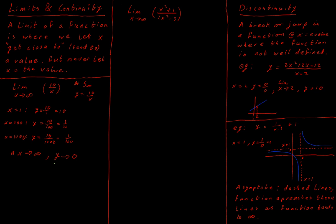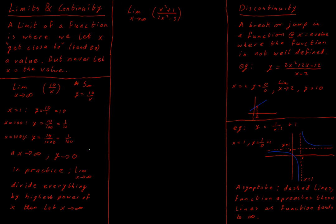That is not the way we're going to deal with these questions in general. In practice, if you're given an x-to-infinity type question, what we're going to do is divide above and below by the highest power of x. We will always do the same thing: divide every term by the highest power of x that we have in our question, and then let x tend to infinity. Why would we do that? It will become apparent when we start doing the next problem.